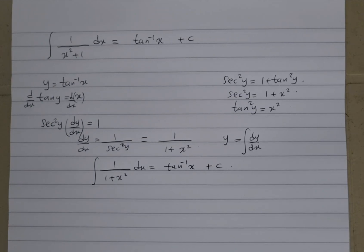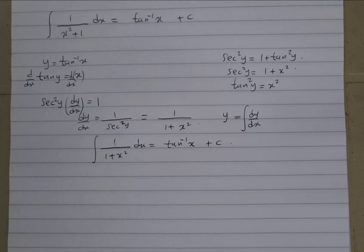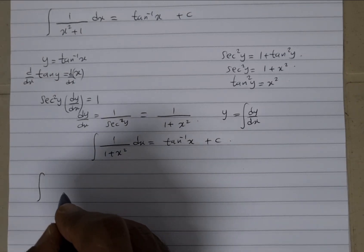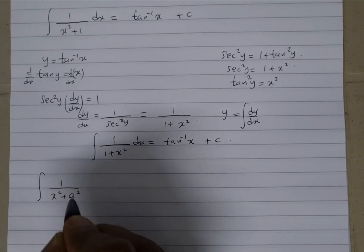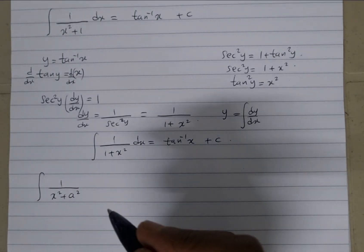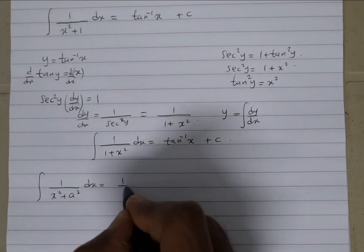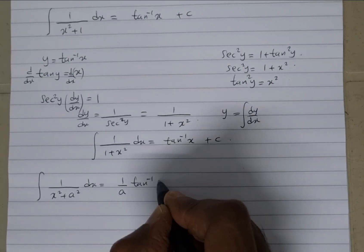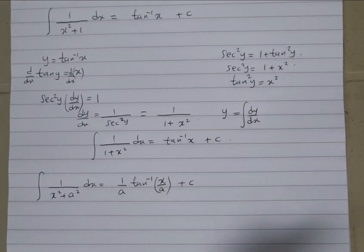It's a very important result. We can also expand this — say you've got something like the integral of 1 over x squared plus a squared dx. Now that can get a little bit complicated, but this is the way we do it. You're going to get 1 over a times tan inverse of x over a, plus c.